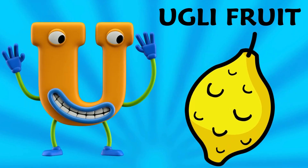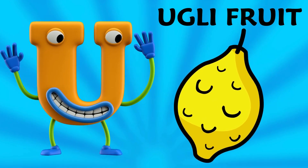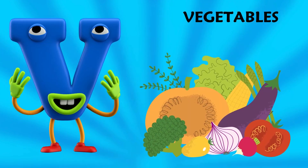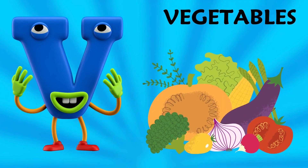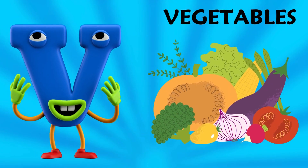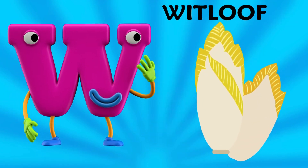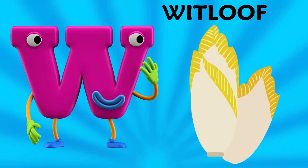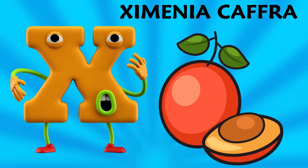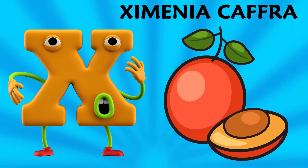U is for ugly fruit, ugly fruit. V is for vegetables, vegetables. W is for whit loaf, whit loaf. X is for zymenia calf, zymenia calf.